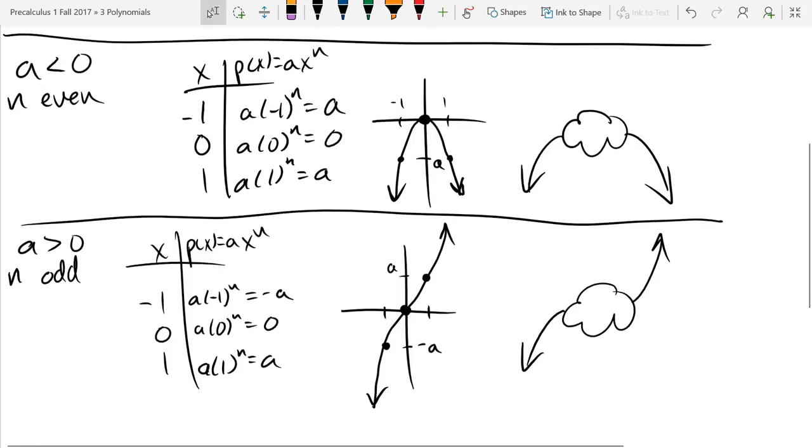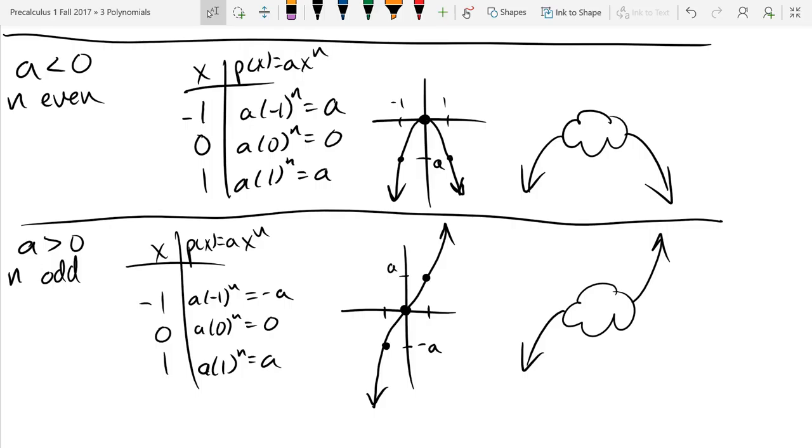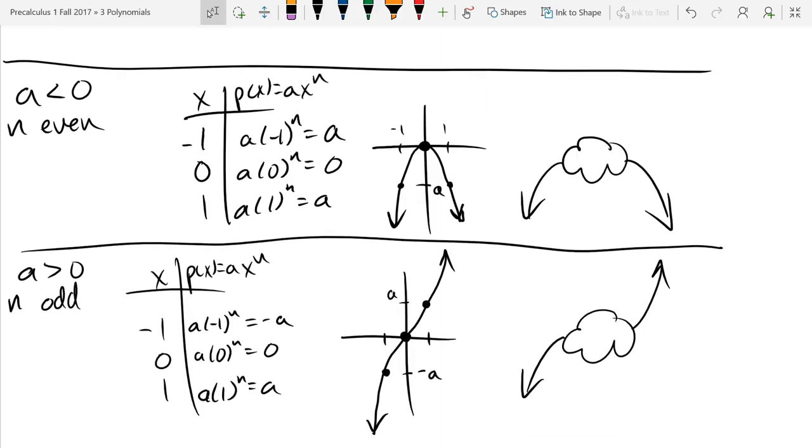So the best way to remember evens is the sides match, both up, both down. And the best way to remember odds is they don't match. One's up and the other's down, or vice versa. So odds they don't match, evens they do match. And the other way, evens are parabola. So it looks like a happy parabola or a sad parabola.